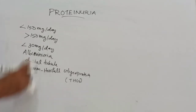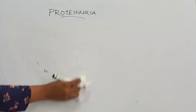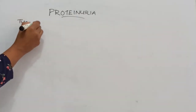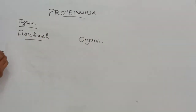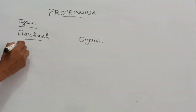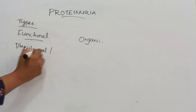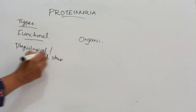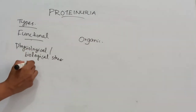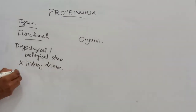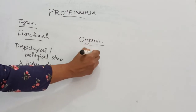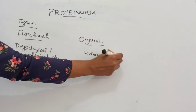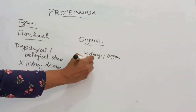Coming to the types of proteinuria, proteinuria could be functional or organic. Functional proteinuria is due to physiological or biological stress on the kidneys, and it is not accompanied by any symptoms of kidney disease. Organic proteinuria is due to involvement of the kidneys or other organs, and is associated with nephron damage.